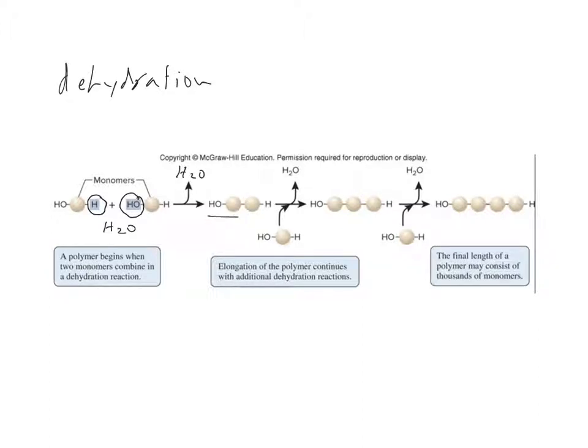When those two monomers combine to make a polymer, a water is lost. That water molecule would have been in the middle there, and that is a dehydration reaction that links two monomers together for polymerization.